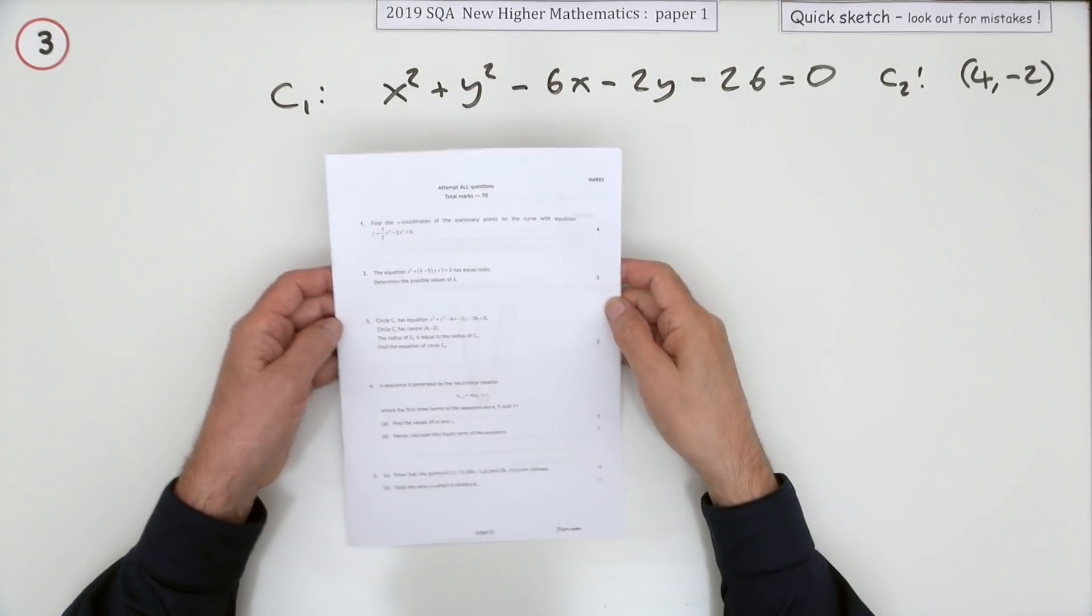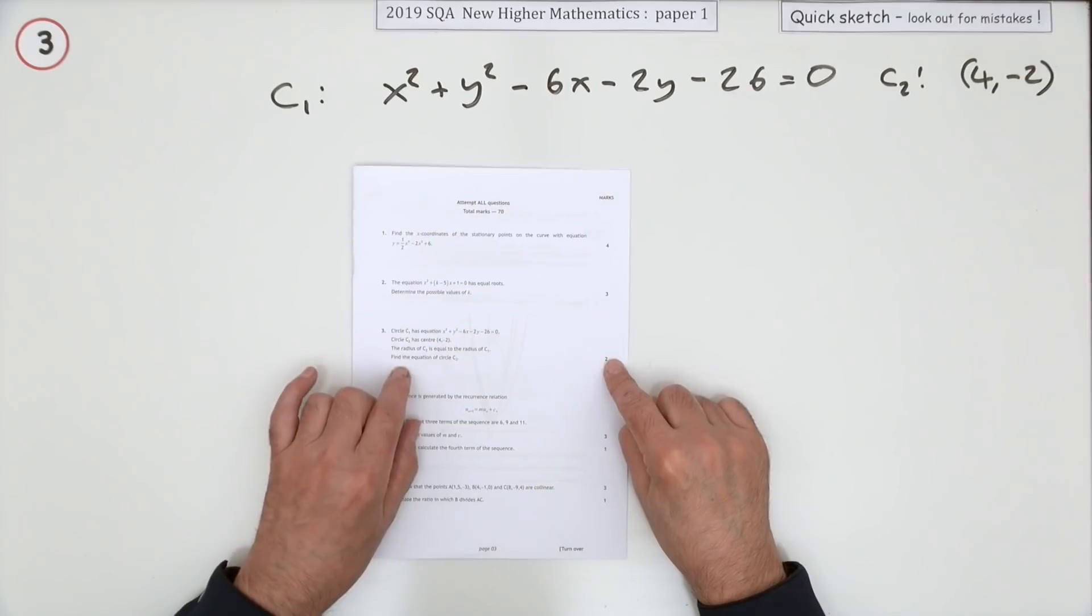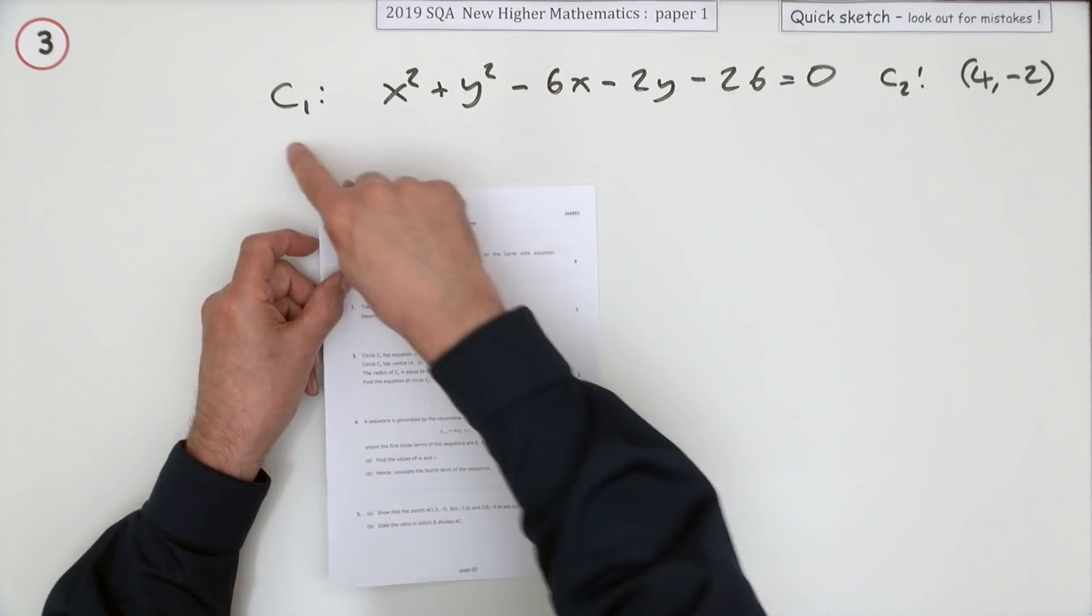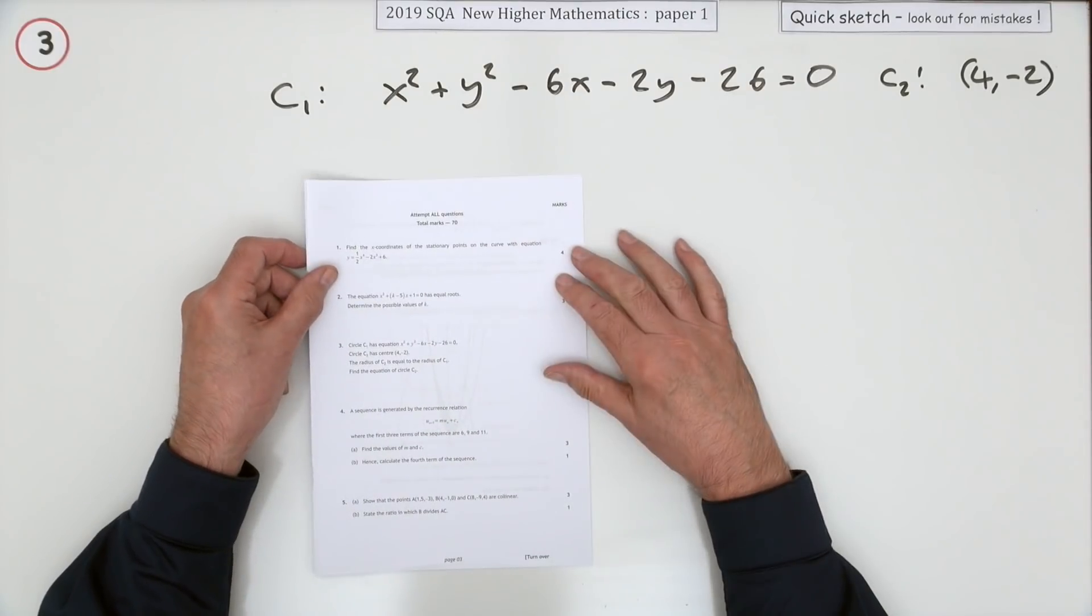Number 3 then from the 2019 Higher Maths Paper 1. Just a wee two-mark question this time for the circles. You're given the equation of this first circle, C1, in the expanded form, the general form.